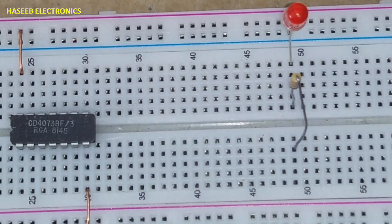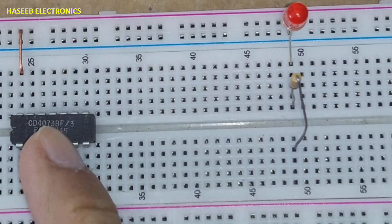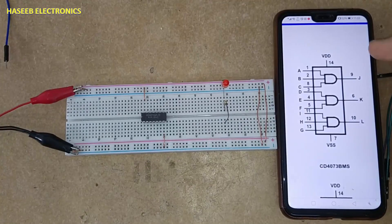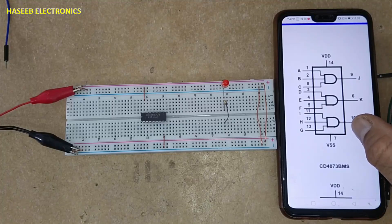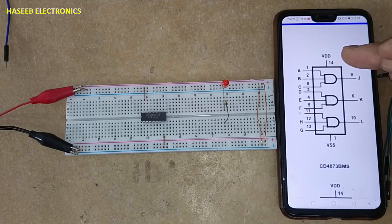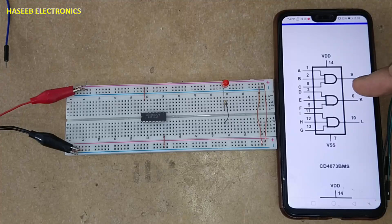Assalamu alaikum warahmatullahi wabarakatuh friends, welcome back to my channel. The CD4073 is a 14-pin CMOS IC with pin 14 as VDD, pin 7 as ground, and operates on 3 volt to 15 volt power supply.